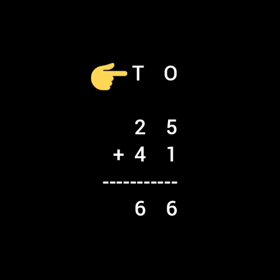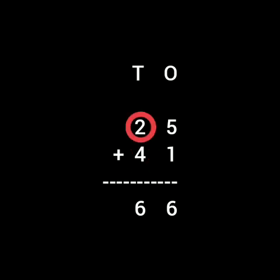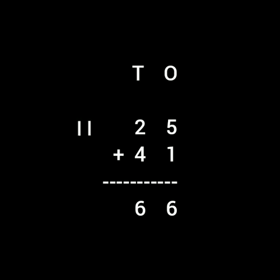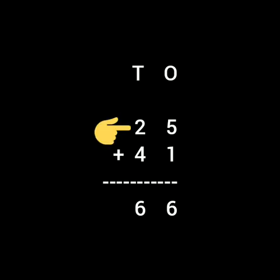Now let us see the 10's column. Under the 10's column you can see 2 plus 4. On one hand you have to take out 2 fingers and on the other hand 4 fingers. Now let us count them together: 1, 2, 3, 4, 5, 6. So the answer will come 66. Means 25 plus 41 equals 66.